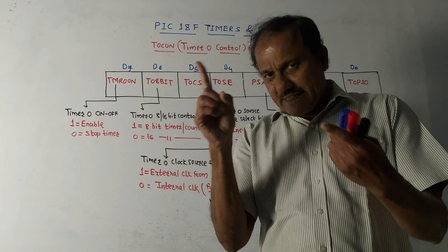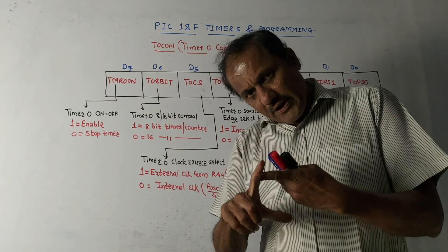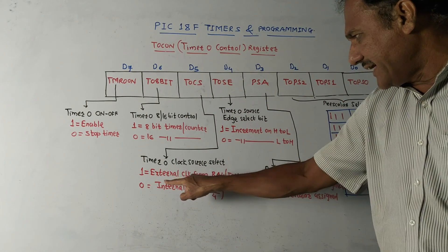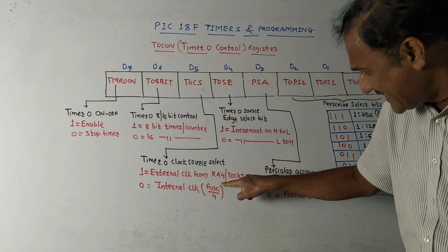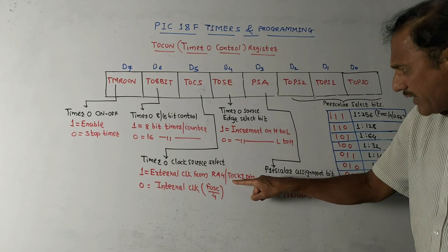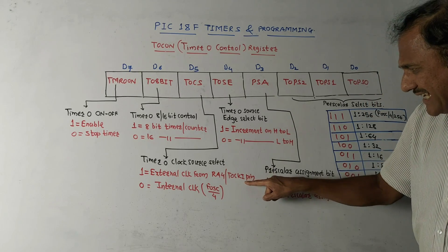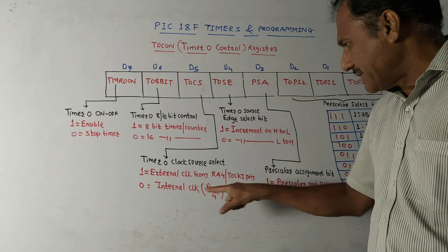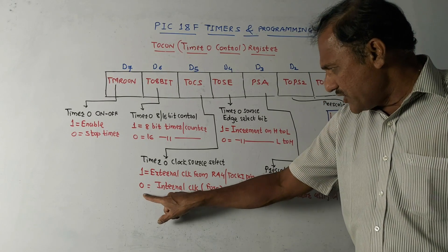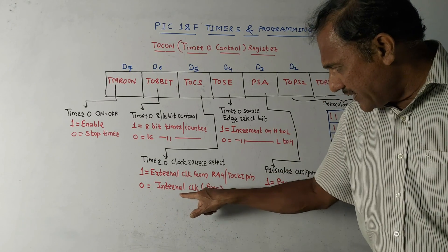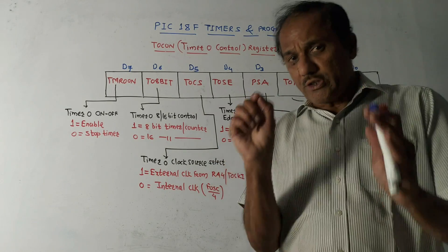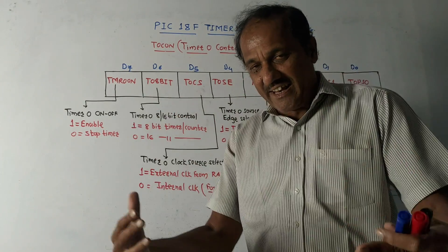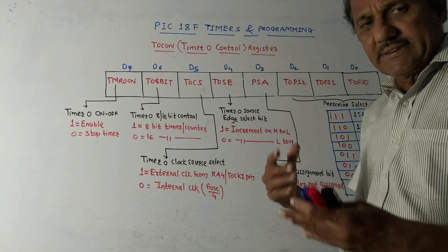We have two options: we can select internal clock or we can select external clock. If the bit is 1 it indicates external clock from pins RA4 or T0CKI - you can connect an external clock signal to these pins. If it is 0, internal clock is used. There is one important term called pre-scale.